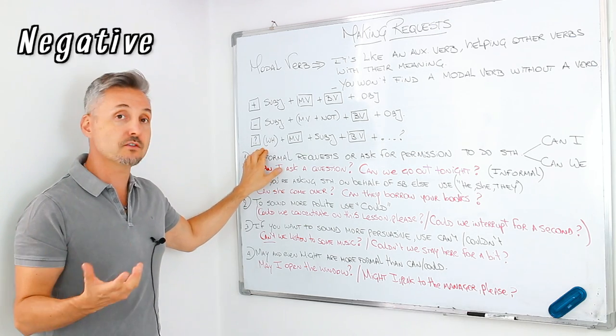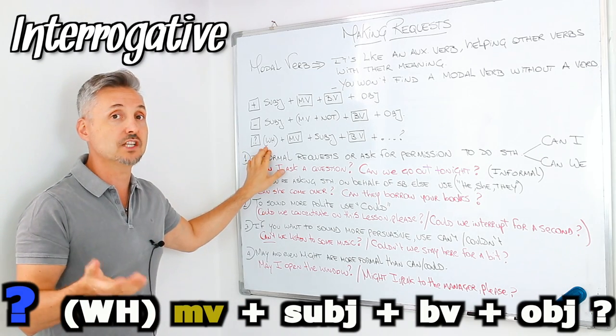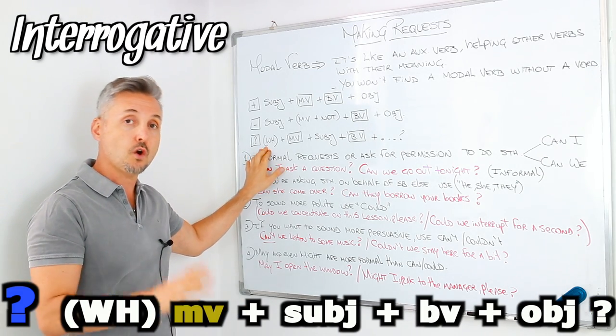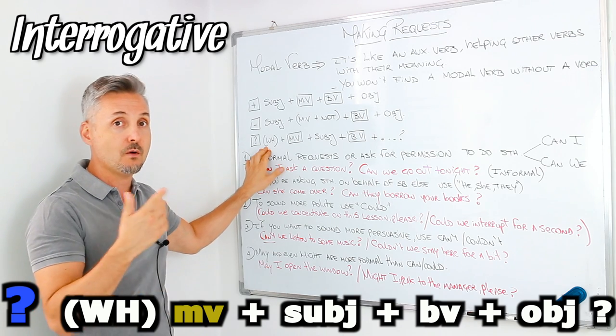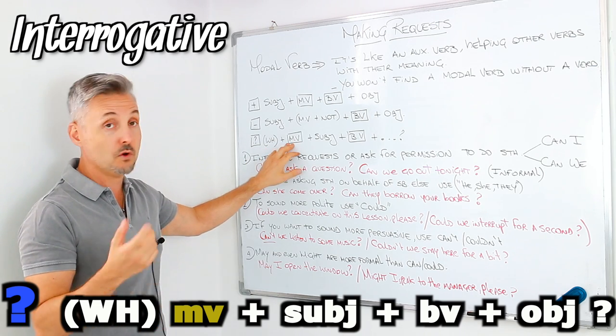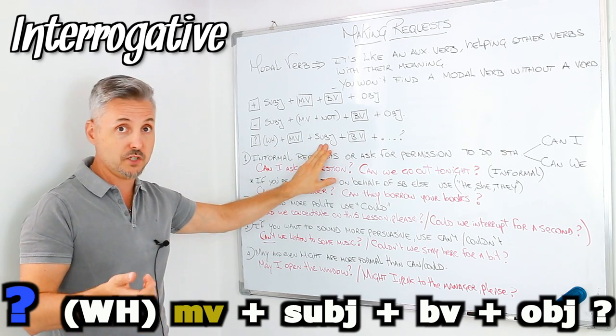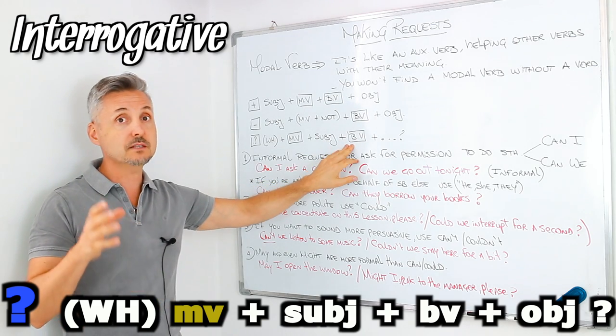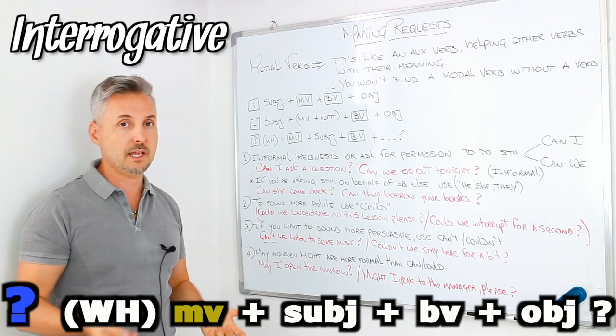For an interrogative sentence, we need the WH question word if there is one, who, where, how, etc., plus the modal verb plus the subject, plus the base of the verb and then whatever is next.